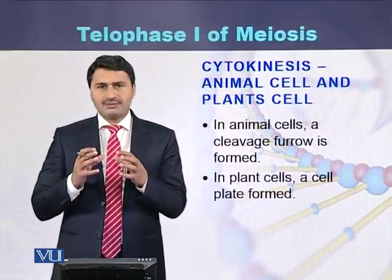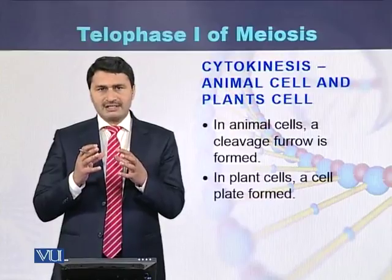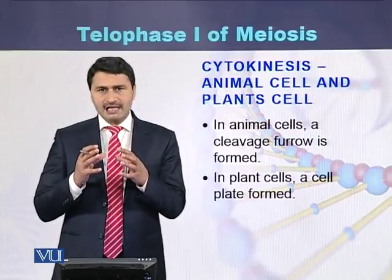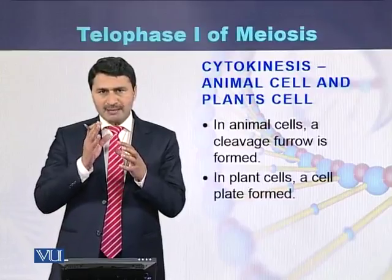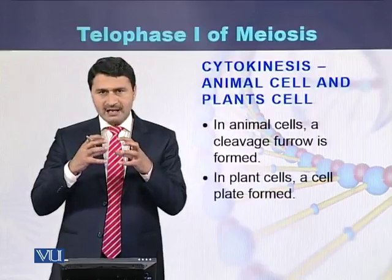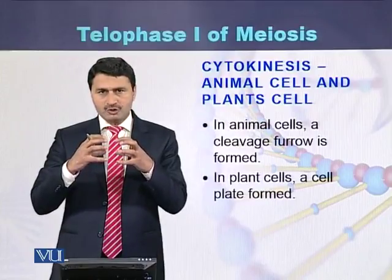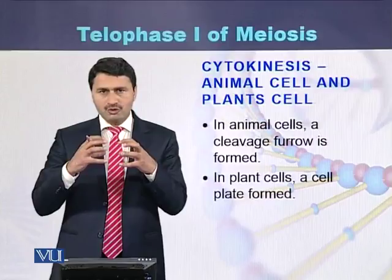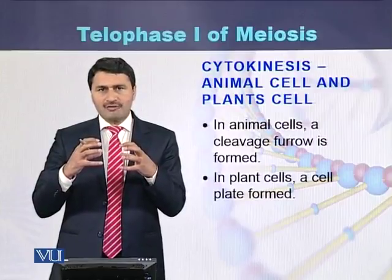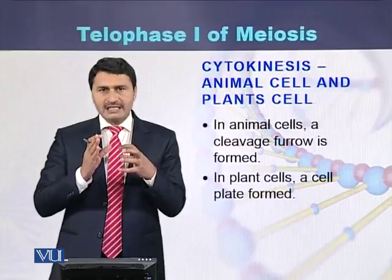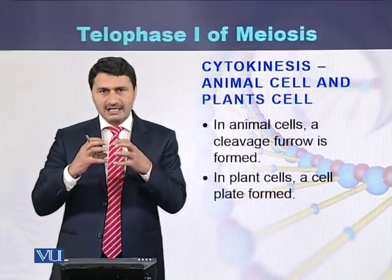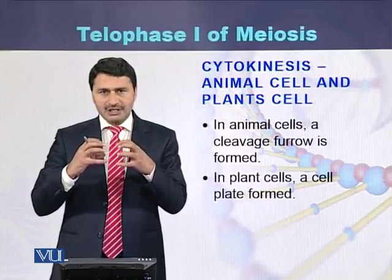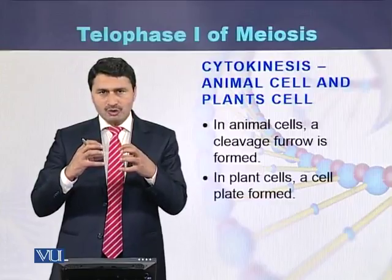Cytokinesis differs between animal cells and plant cells. In animal cells, a membrane furrow is formed that pinches the cell and converts it into 2 cells. In plant cells, a plate is formed in the middle consisting of vesicles. These vesicles enlarge and split the cell into 2 plant cells.